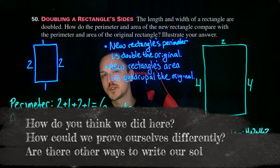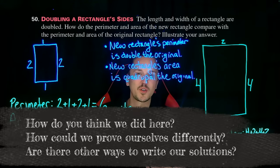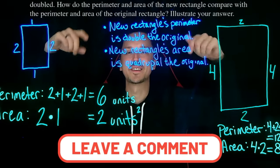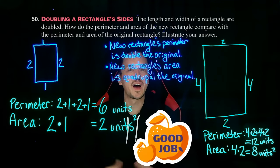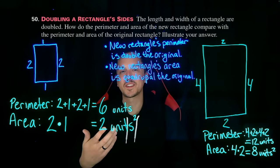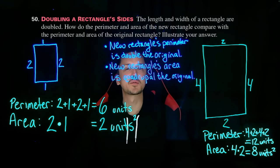How do you think we did here? How could we prove ourselves differently? Are there other ways to write our solutions? Let me know down in the comments. Props to you for taking some time out of your day to do some math with me. I hope you followed along, and if you made mistakes, that's great. Remember that every mistake is a step towards learning something new.